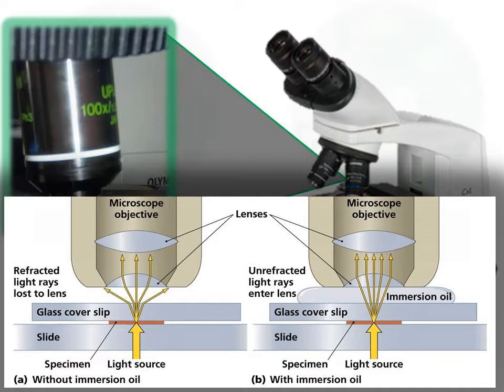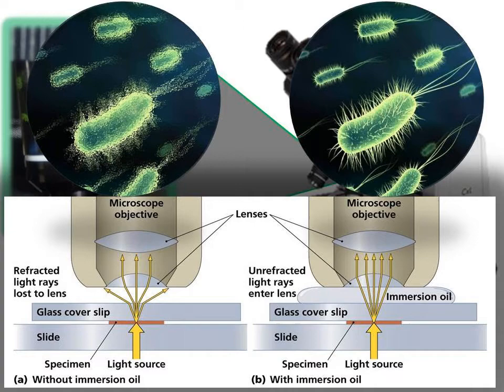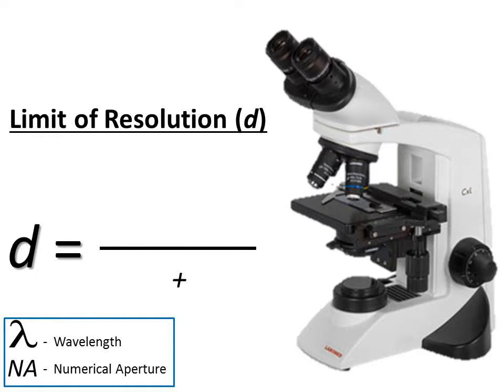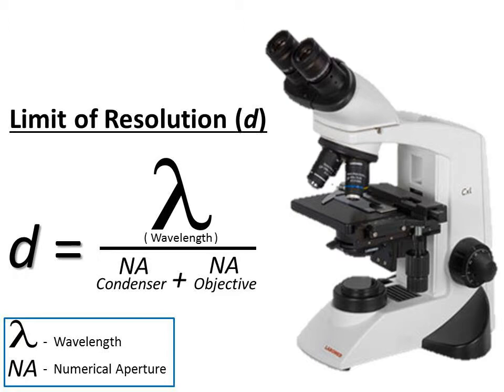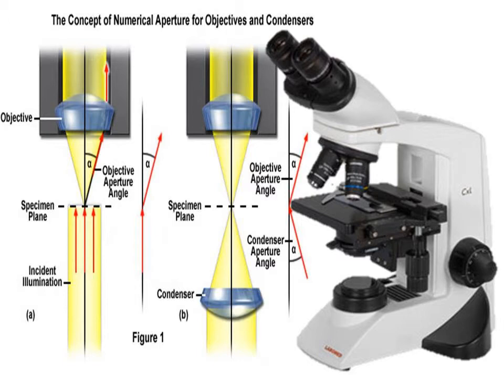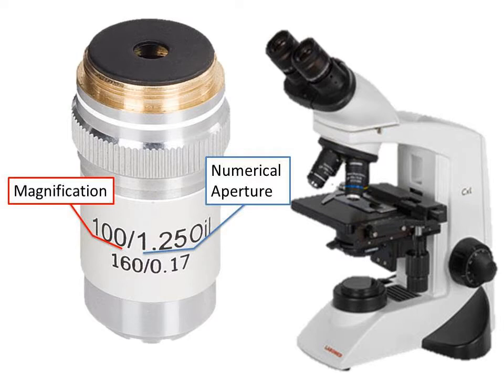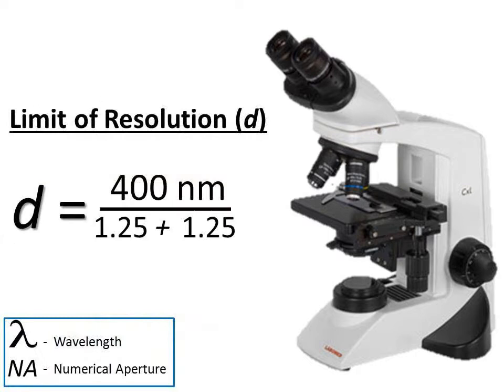However, even with immersion oil, there's a limit to the resolution that can be achieved, and there's a formula to calculate that limit. The limit of resolution is equal to the wavelength of light divided by the numerical apertures of the condenser and objective lens. Numerical aperture has to do with the angle at which a system can accept or emit light, and this number is usually written directly on the lens. Human beings can see a range of light between 400 and 700 nanometers, and with these figures we can calculate that the standard compound light microscope can reach a resolution limit of about 160 nanometers.